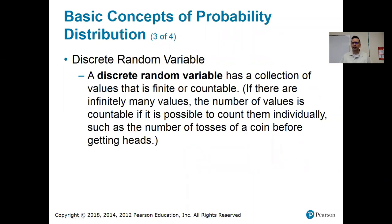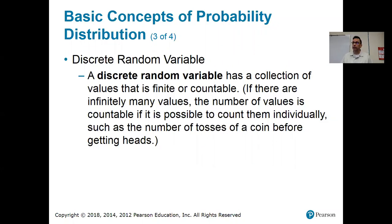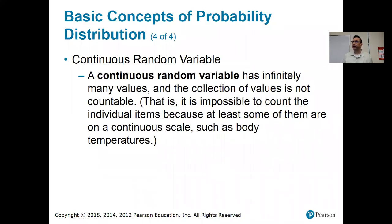We've talked before about the difference between discrete and continuous data. Discrete answers the question 'how many?' and continuous answers 'how much?' Something is discrete if it's whole numbers only — a collection of values that is either finite or countable. If you can describe it with whole numbers, it's discrete. If it can be any value along an interval — anything where you might need fractions or decimals — that's called continuous.